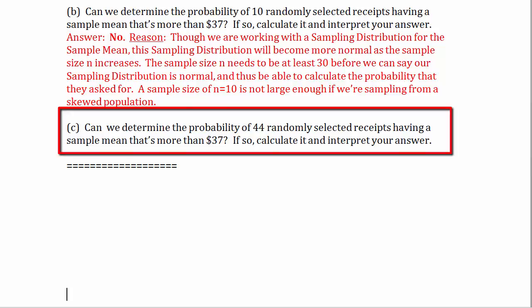Now the question is: can we determine the probability of 44 randomly selected receipts having a sample mean that's more than $37? Now we're talking. A sampling distribution for the sample mean becomes more and more normal as the sample size n increases. So as that sample size increases to at least 30 or more, those sample means will cluster around the population mean and develop a normal distribution — and that's what's happening here.